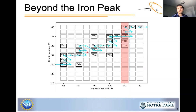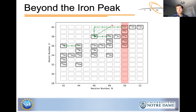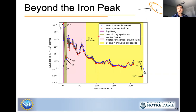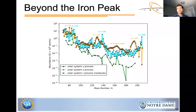In the r-process, a nucleus captures many neutrons and travels far from the valley of stability. When the neutron flux ends, whatever is produced along the r-process path will beta decay back to the valley of stability. The gamma process is a complex series of photo-disintegration reactions like gamma-n, gamma-p, and gamma-alpha, and is responsible for producing 35 neutron-deficient nuclides. The solar system abundance pattern can be decomposed into contributions from those three processes.